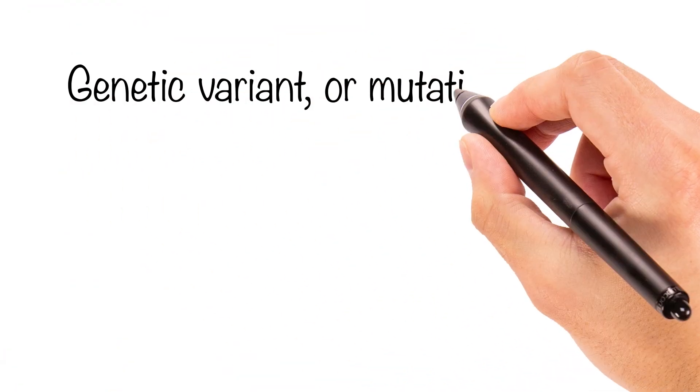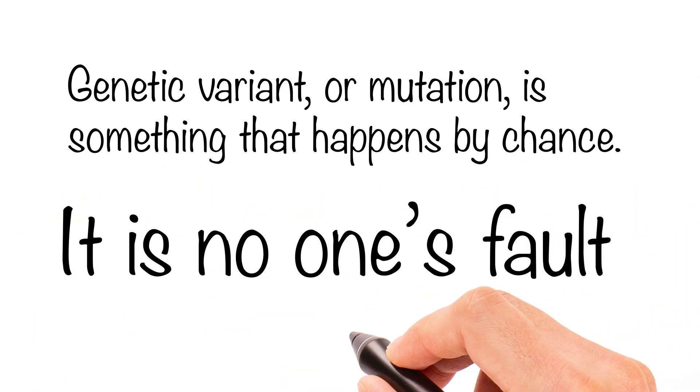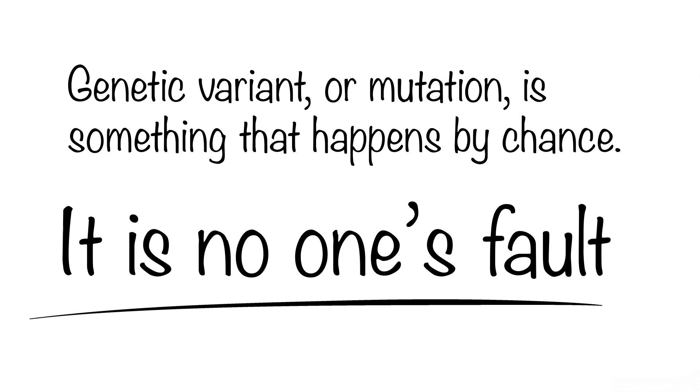It is important for you to know that a genetic variant, or mutation, is something that happens by chance. If a genetic variant is found in your child, it is no one's fault. A child may have a genetic variant that is brand new and not found in their parents. They may be the only person in the family with the genetic variant and with epilepsy.